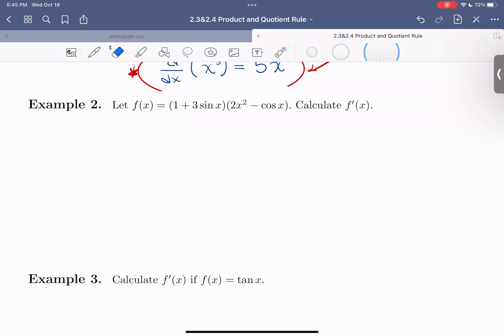So in this situation, we're given a function (1 + 3sin x) times (2x² - cos x). We can see that the form of this function is a product. We have two terms times 2x² minus cosine x. So we're going to use the product rule.